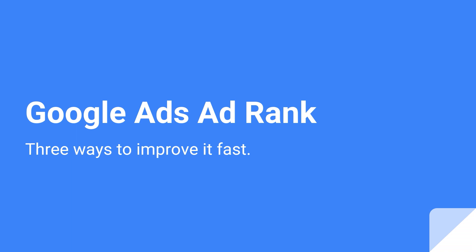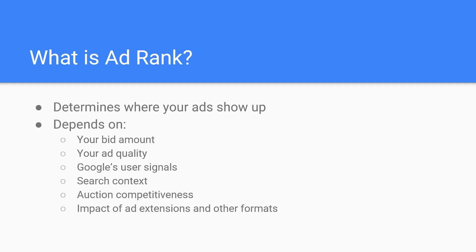But what factors actually impact your ad rank? Before 2017, ad rank was really a simple calculation involving your max CPC and the number of competitors relative to the search. Since Google Ads introduced some key changes to the way ad rank is calculated, such as thresholds and machine learning, it's become a lot more complex.